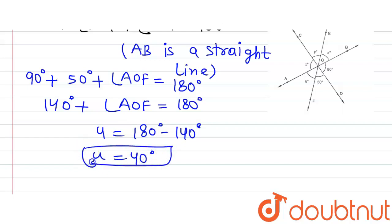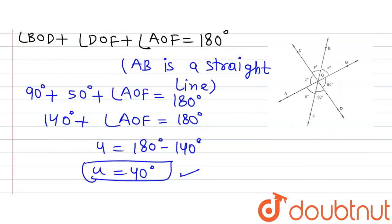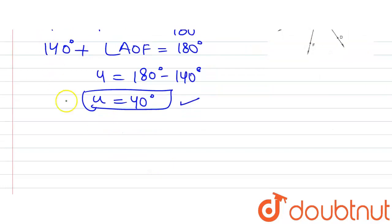which gives us 40 degrees. So U is equal to 40 degrees. Now, since lines EF and AB are intersecting each other, X and U are vertically opposite angles. We know that vertically opposite angles are equal, so X will be equal to U, which is 40 degrees.